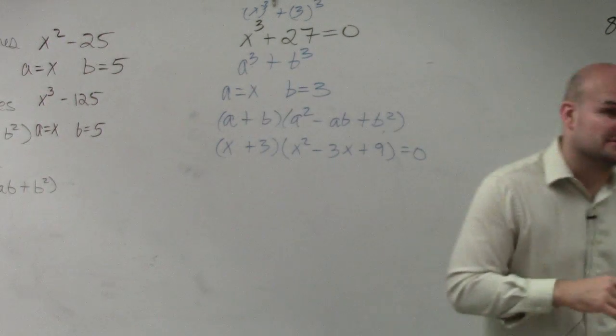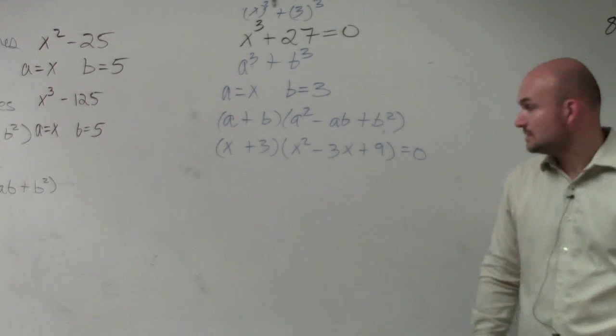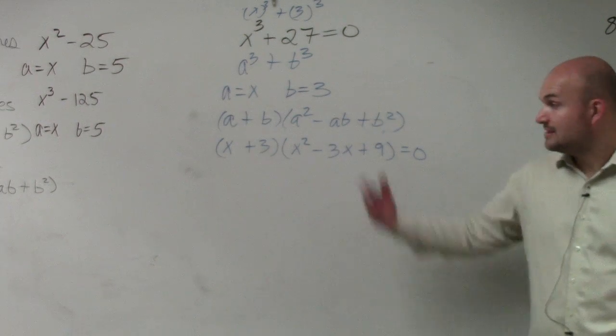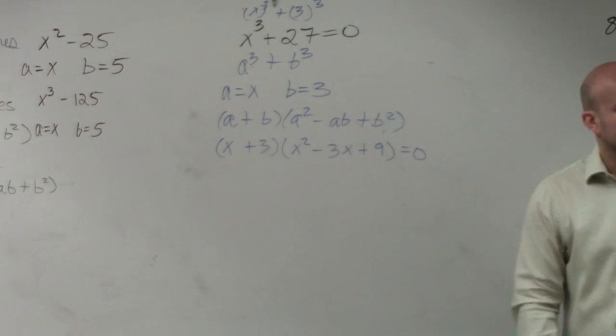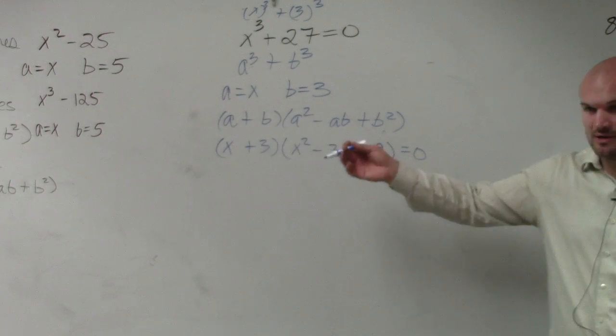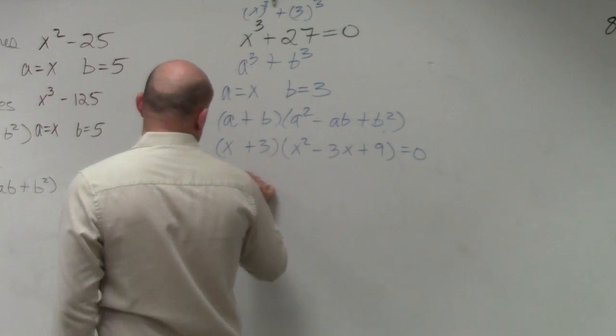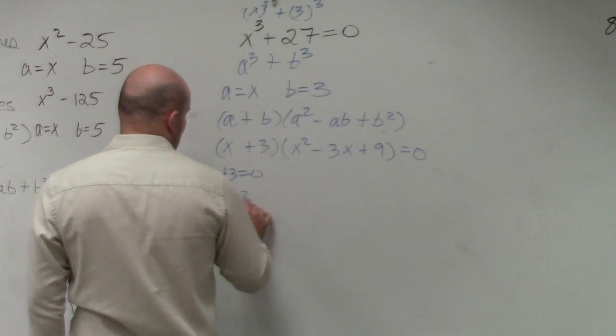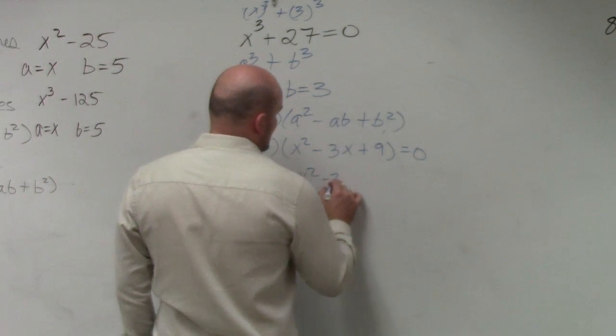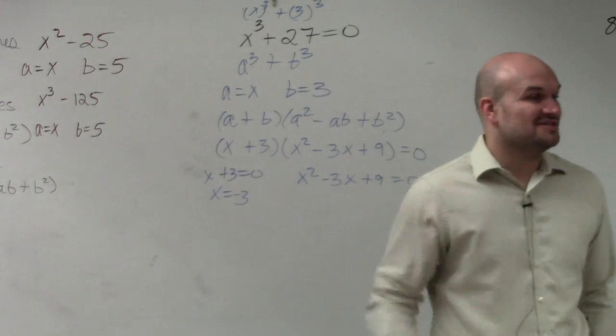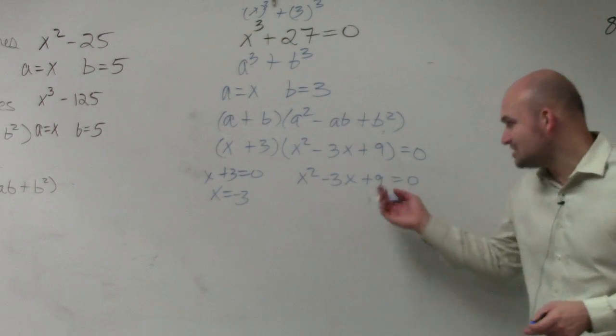So now we know a is x and b is 3, so just plug everything in. Now remember, this was set equal to 0. Does everybody see what I did? Kind of? A little bit? So now we need to solve. Well, we have the zero product property. So we say x plus 3 equals 0, so x equals negative 3. That one was easy. x squared minus 3x plus 9 equals 0. Crap, we have another quadratic. So we got to think.